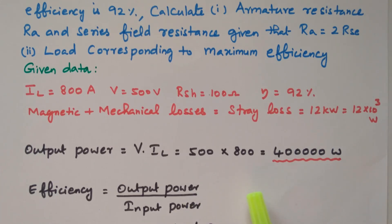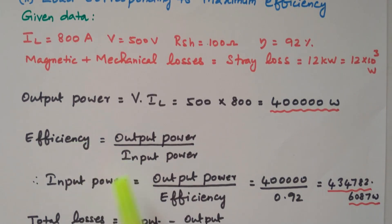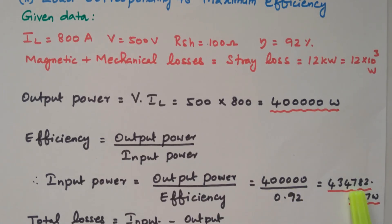From the output power and the given efficiency, we can calculate the input power. Efficiency = output power / input power, so input power = output power / efficiency = 400,000 / 0.92 = 434,782.6087 watts. As expected, input power is greater than output power.